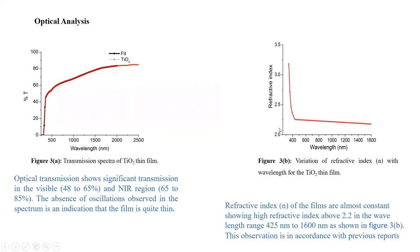For optical analysis, the optical transmission shows significant transmission in the visible and NIR range from 65 to 85 percent. The oscillations observed in the spectrum indicate that the film is quite uniform and homogeneous. The refractive index N of the films is almost constant, showing a high refractive index above 2.2 in the wavelength range of 425 nm to 1600 nm, as shown in Figure 3.